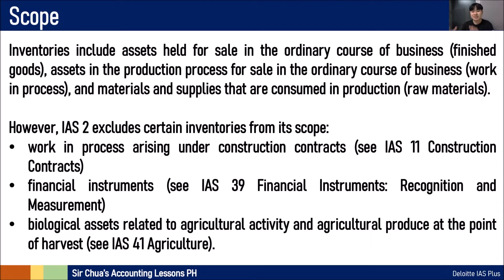In case those inventories are still in the process of transformation, then it is work-in-process inventory — those are in the production process that are not yet finished. And then we also have inventories that haven't started the production process yet: materials and supplies that are consumed for your production and manufacturing — those are called raw materials inventory.